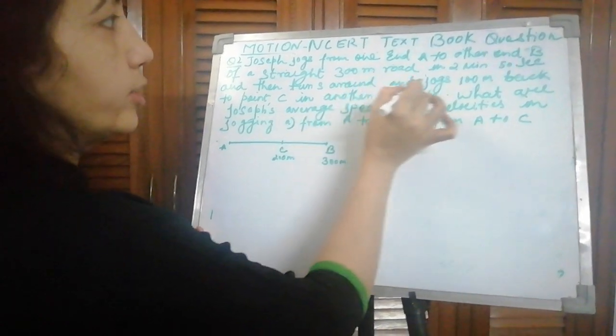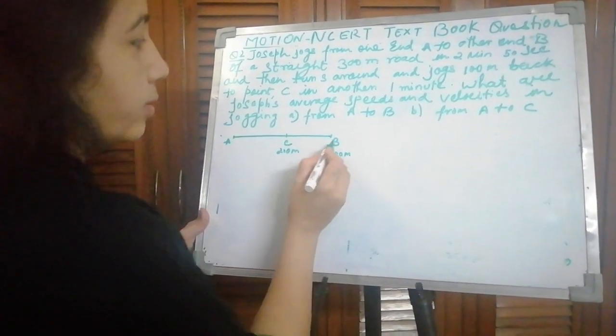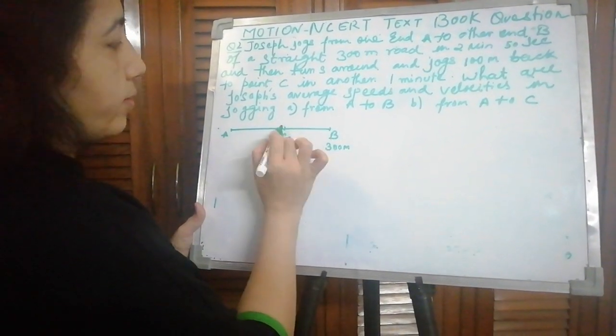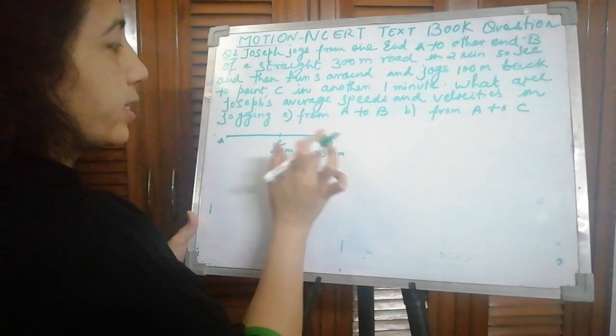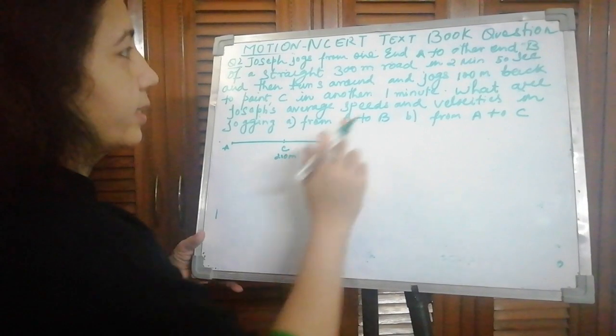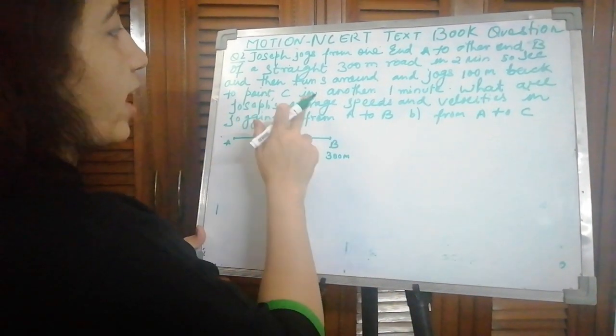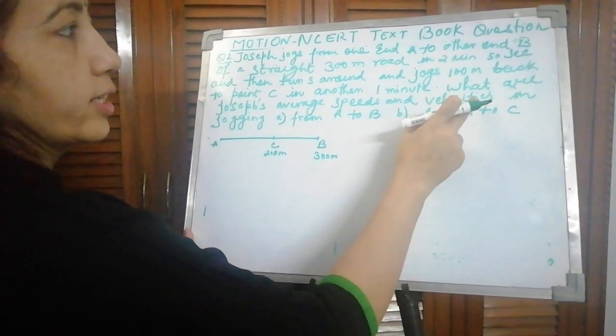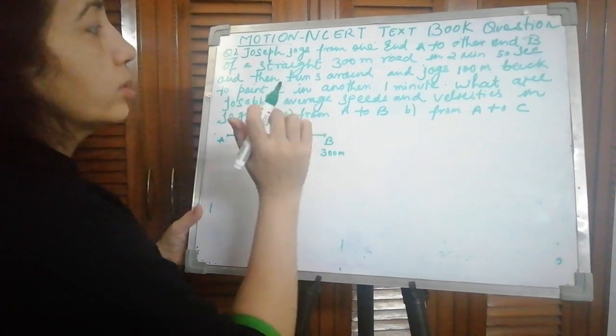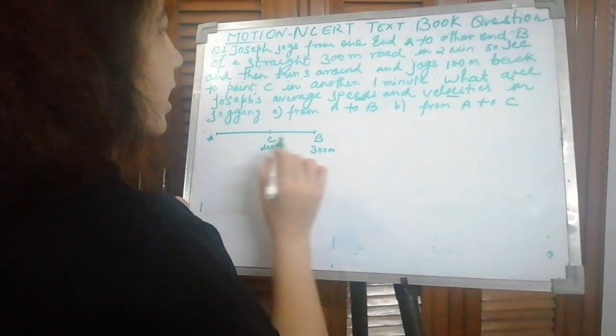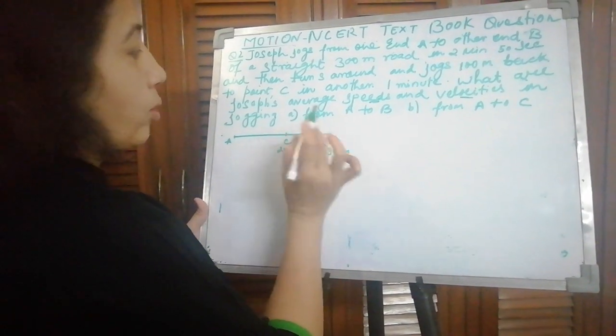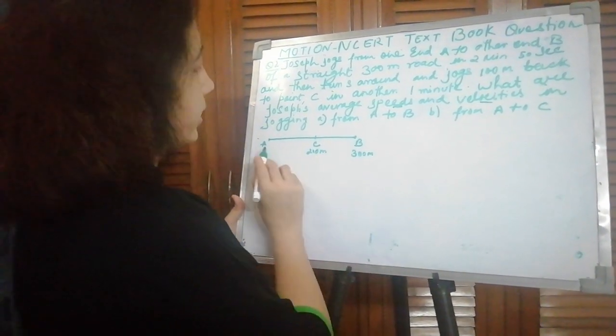And then turns around and jogs 100 meters back to point C in another 1 minute. What are Joseph's average speed and velocities in jogging from A to B and A to C?